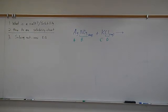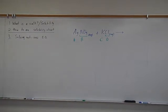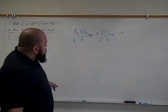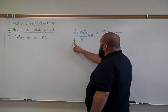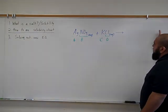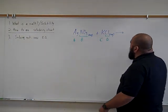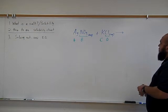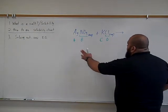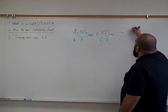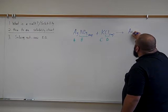When you do the double replacement reaction, you have to do what I've taught you: join A with D on the product side and join C with B on the product side. So if we do that, A with D, we get silver chloride.